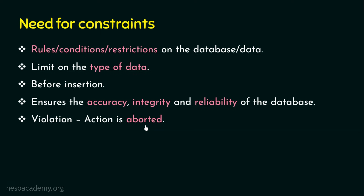Constraints are one of the powerful features of databases, and these constraints can be enforced at two levels. One is at the column level and the other one is at the table level. Suppose if you are designing a database, you have two ways of enforcing the constraints. As the course progresses, you will be able to understand the column level constraints and the table level constraints.